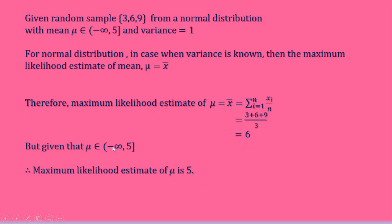So here the maximum likelihood estimate of μ should be 5. As we get here maximum likelihood estimate of μ is equal to 6, and it is given that μ belongs to (-∞, 5]. So here we can say the maximum likelihood estimate of μ is 5.